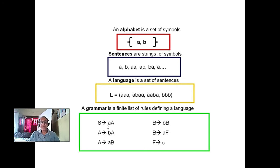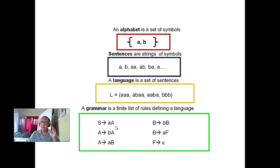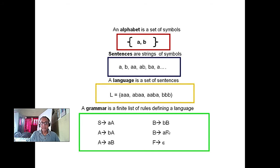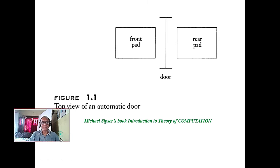The grammar consists of a start symbol, which is a variable. The right-hand side can have only one terminal, or a terminal and a variable. If the variable is at the end of the right-hand side, it is called a right linear grammar. All the examples here are right linear grammars, which we will discuss in more detail later.